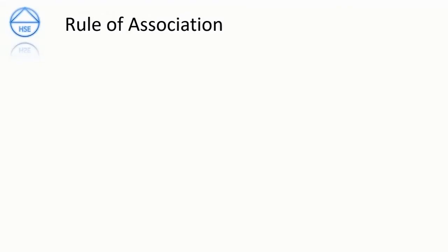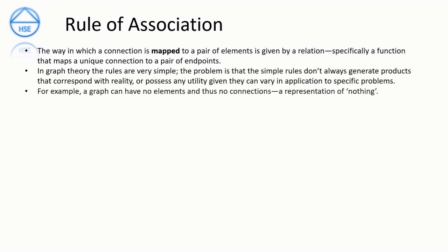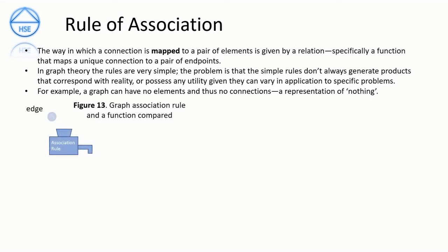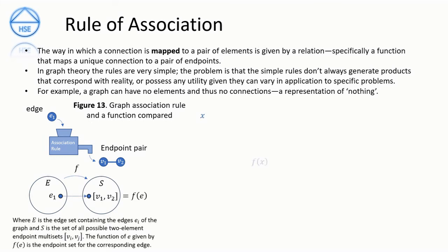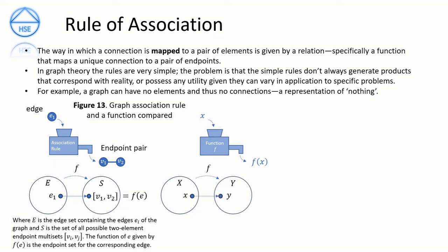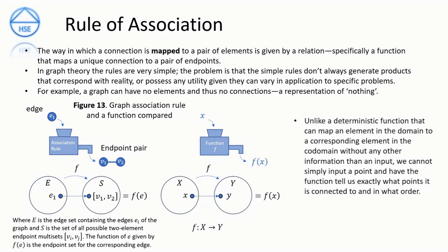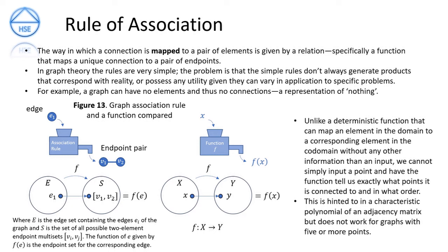Rule of association: the final introduction to graph components is the way a connection is mapped to a pair of elements, given by a relation — specifically a function that maps a unique connection to a pair of endpoints. In graph theory the rules are very simple, but these simple rules don't always generate products that correspond with reality or possess utility, given they can vary in application. For example, a graph can have no elements and thus no connections — a representation of nothing. Figure 13 shows the way the rule of association maps edges to endpoint pairs compared to how a function maps an element of the domain to an element in the codomain. Unlike a deterministic function, we cannot simply input a single point and have it tell us exactly what points it is connected to, thus generating a graph from a single input.